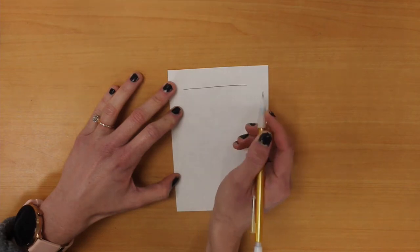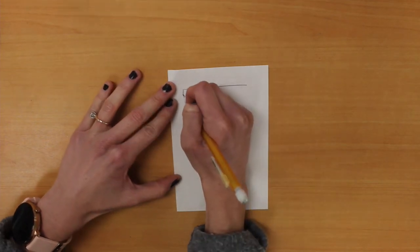Start off by drawing a horizontal line towards the top of your paper. This is going to be the top of the kimono.